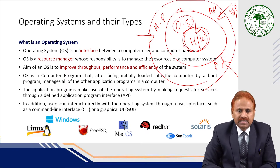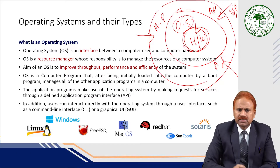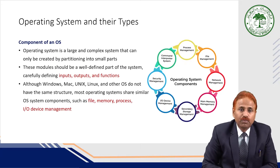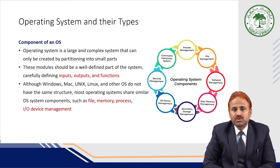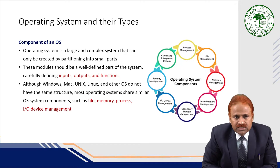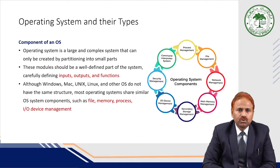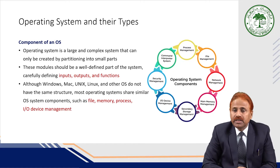Some examples of operating systems include Linux, Windows, Mac, Red Hat, and Solaris. The operating system is a large and complex program that can only be created by partitioning into smaller parts. These modules should be well-defined parts of the system with carefully defined inputs, outputs, and functions. Although Windows, Mac, Unix, Linux, and other operating systems do not have the same structure, most share similar components.